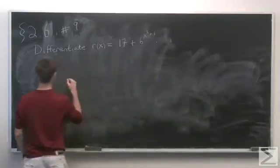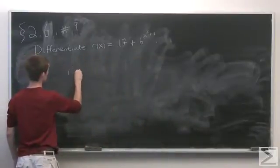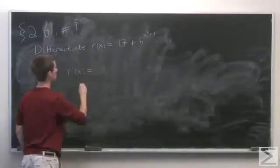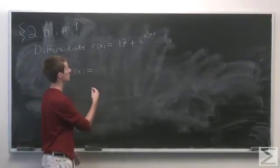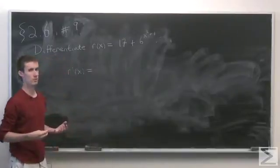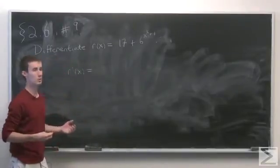Now, start out just by computing the derivative of each term, applying linearity. So the derivative of any constant is just 0. So we're left with just finding the derivative of 6 to the x squared plus 1.